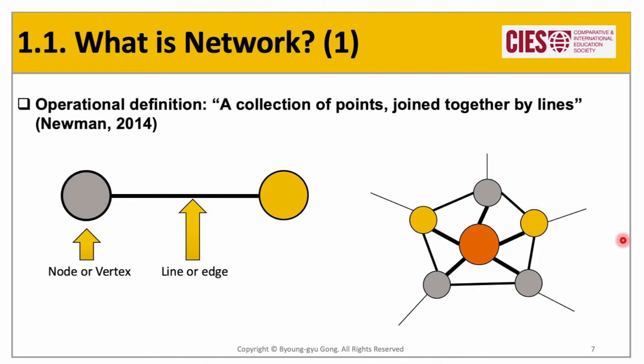So you don't need to feel overwhelmed by a complex, large-sized network. That is the reason why Newman defined a network as a collection of points joined together by lines. Usually, the dot is called a node or vertex, and the line is called a line or edge. I recommend you get used to both terms, as they are widely used and not strictly differentiated.